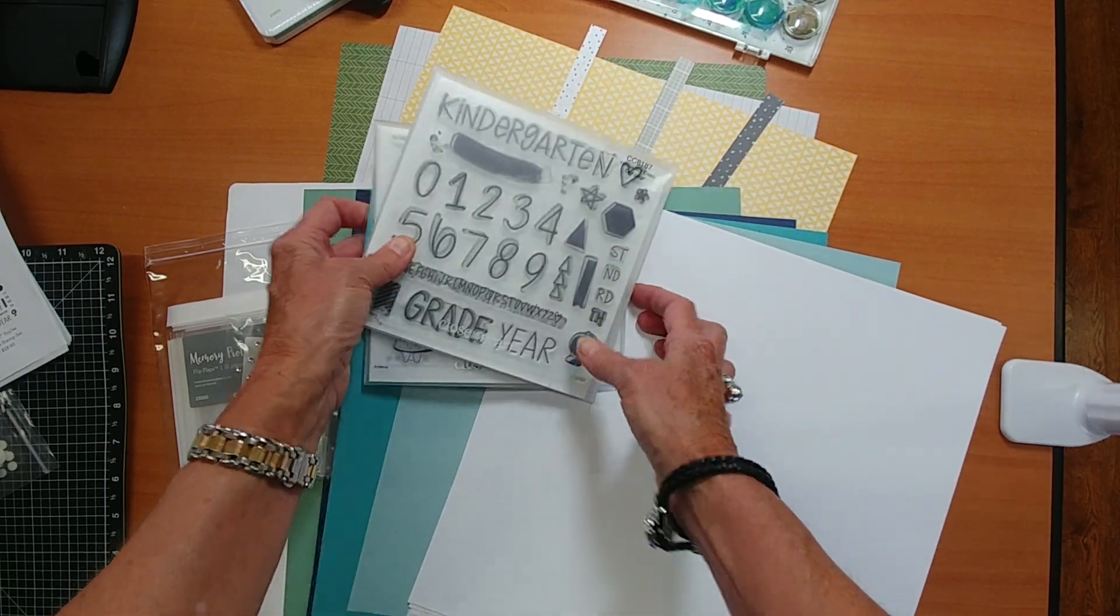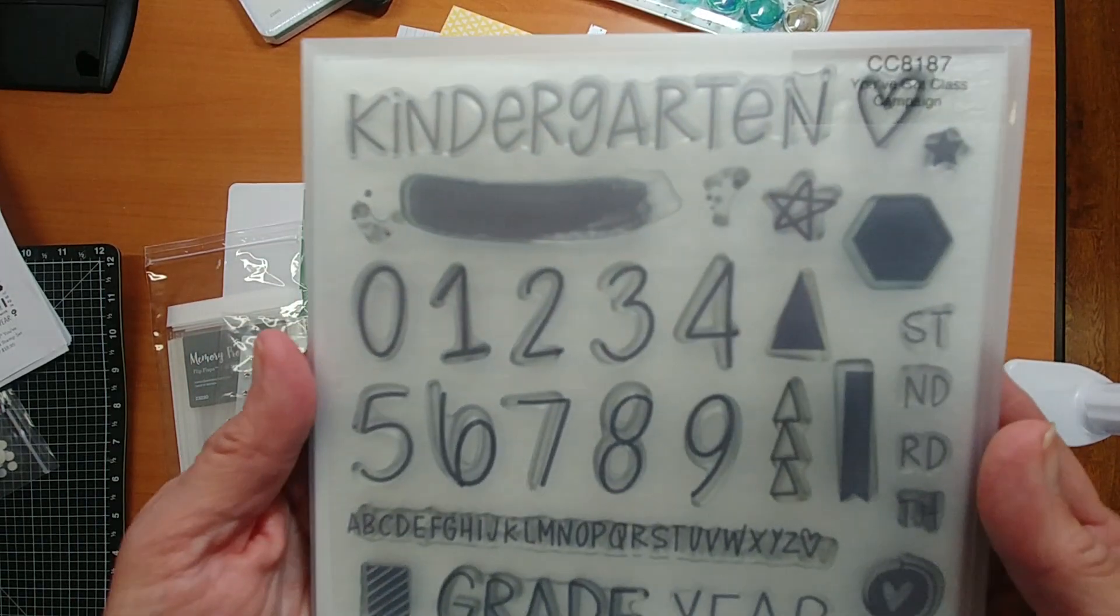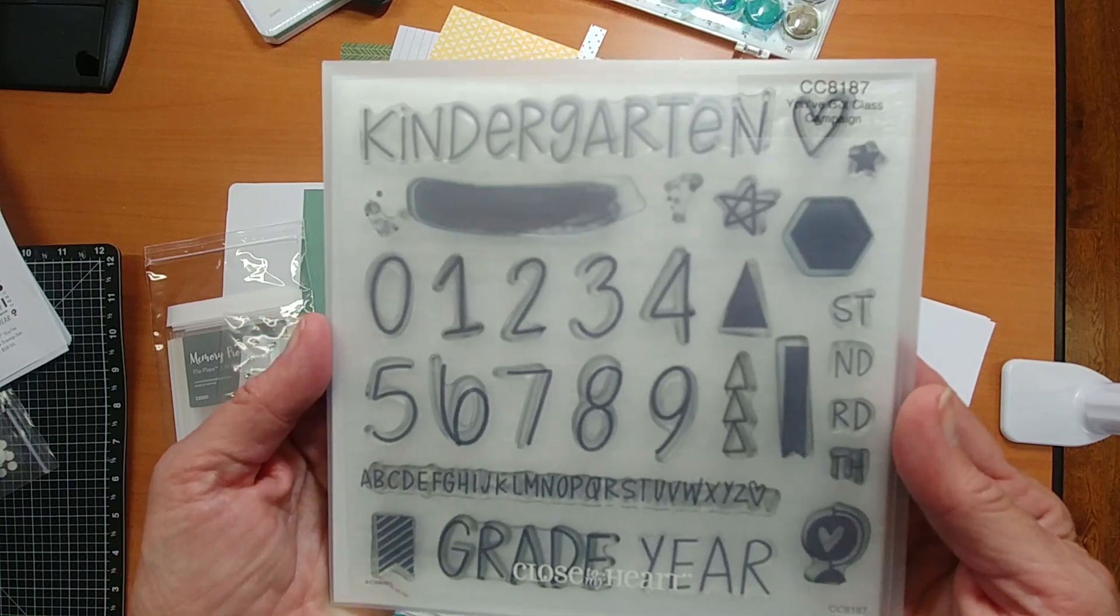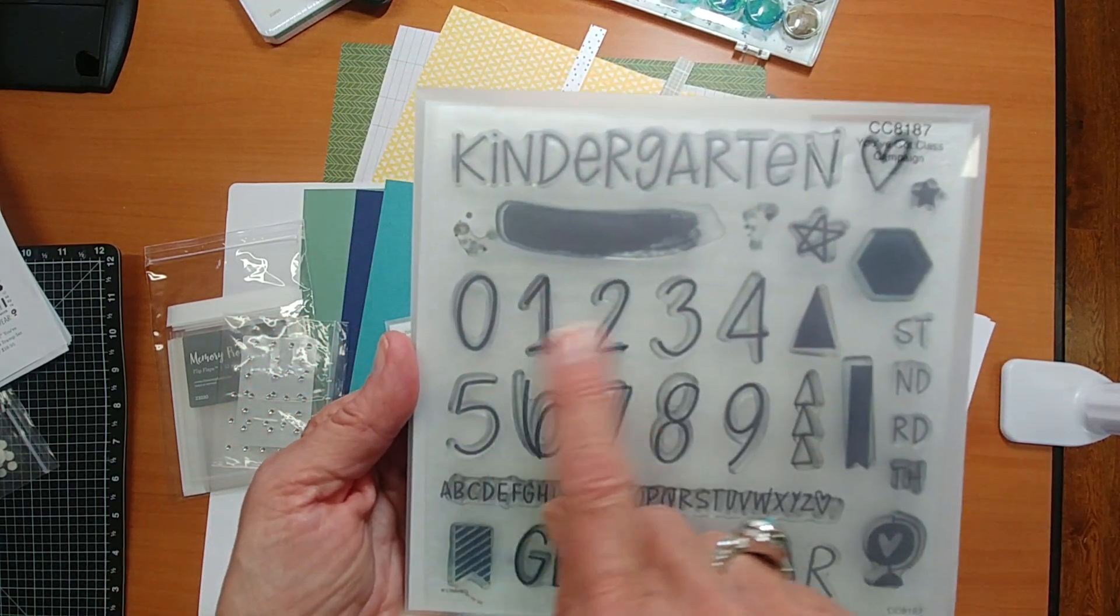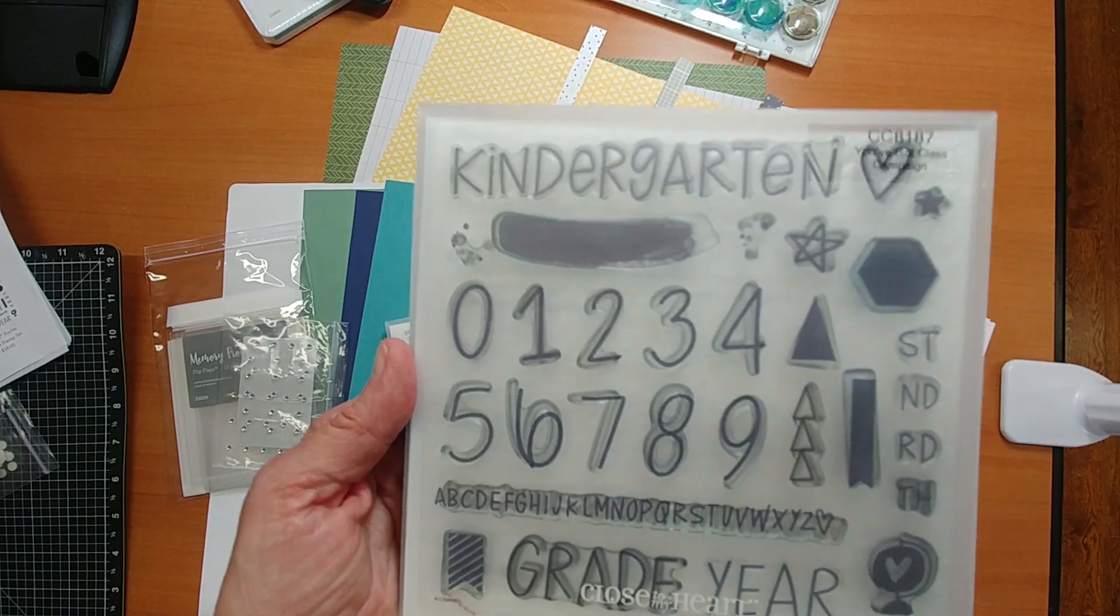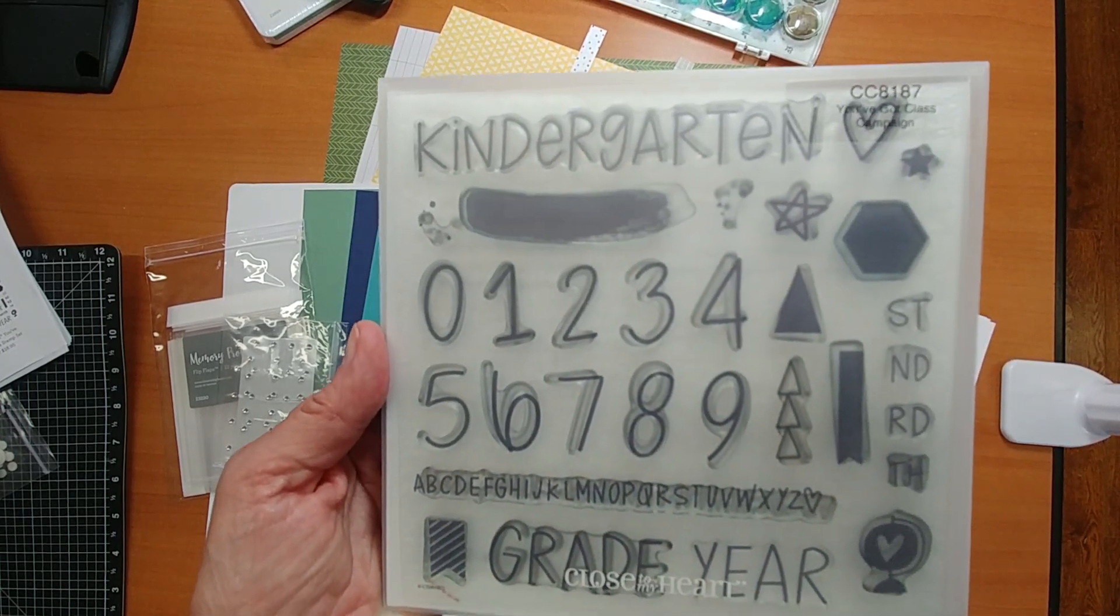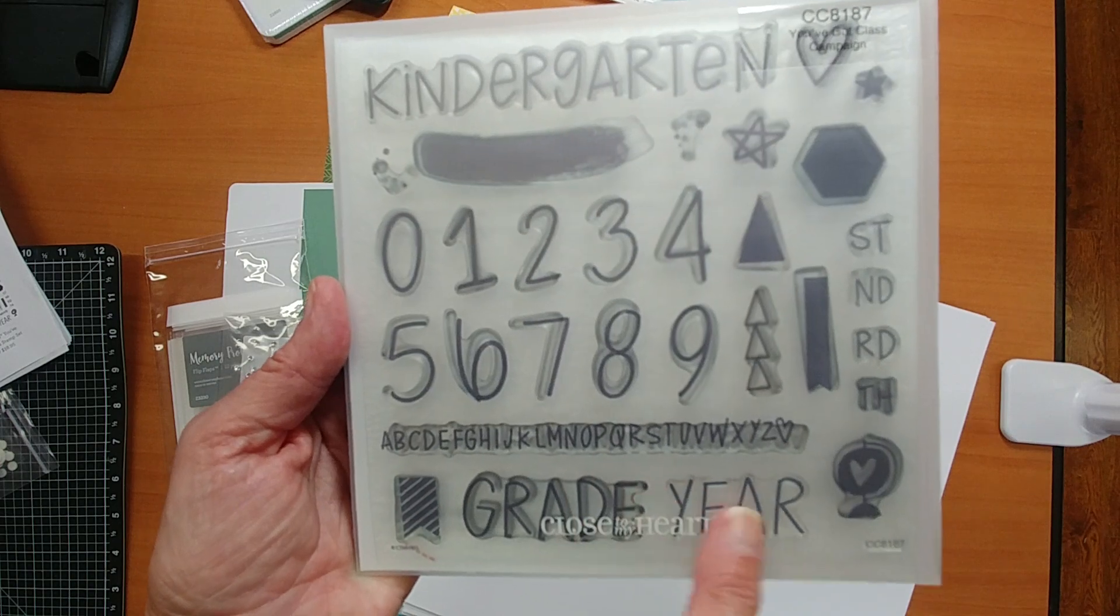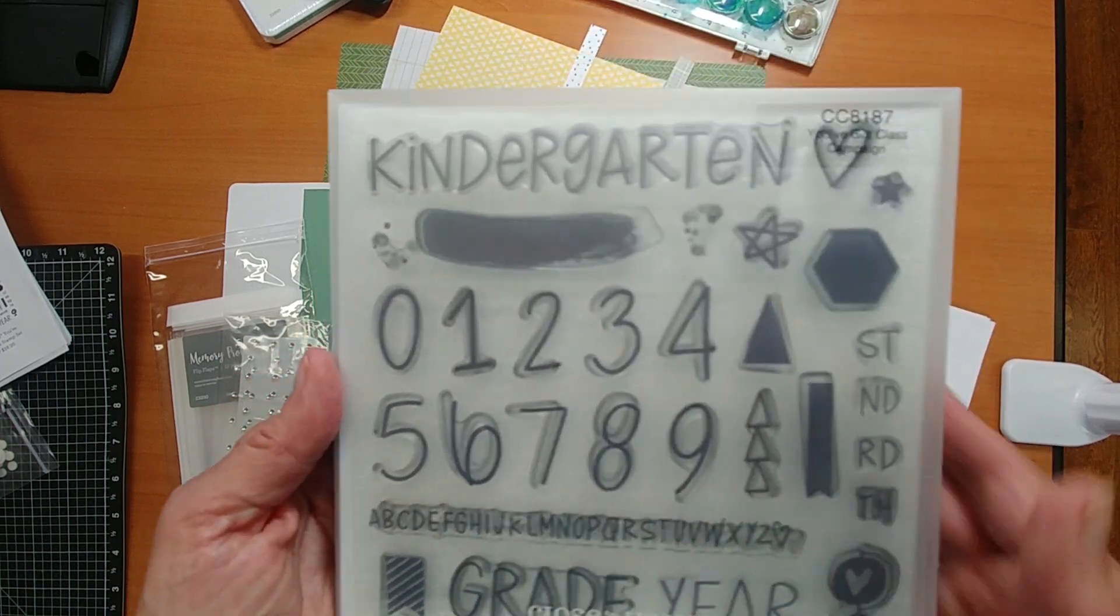There are two stamp sets. As you can see right here, this is the one You've Got Class. So as kindergarten, you can do all of your grades through the 12th grades. You'll use numbers again and again for birthdays and things like that. You can use grade or year, the border stamp, so really a cute stamp set.